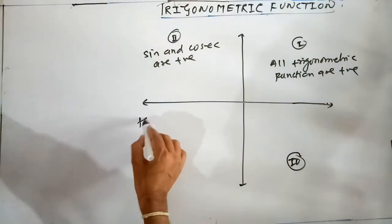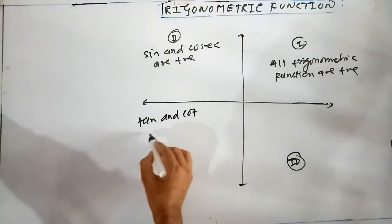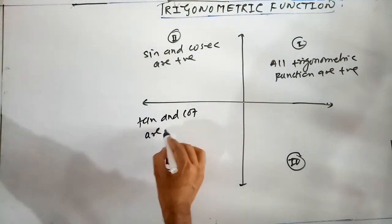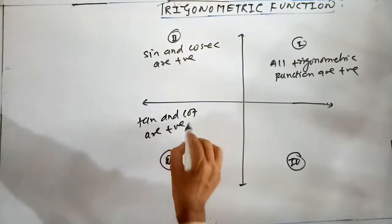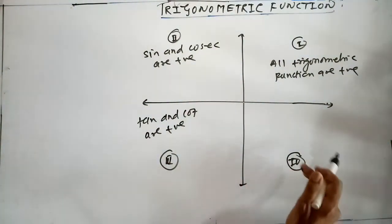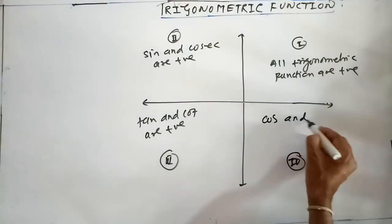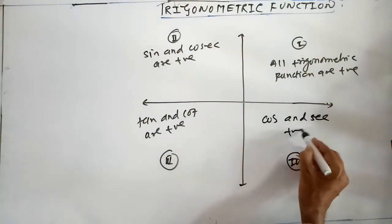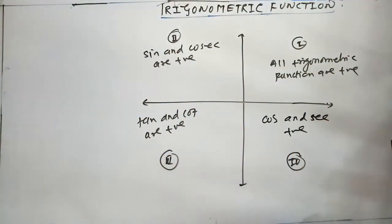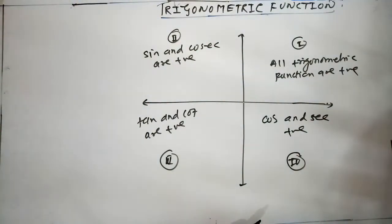Whereas in the third quadrant, tan and cot are positive, whereas other trigonometric functions are negative. And in the fourth quadrant, cos and sec are positive, whereas the rest of the trigonometric functions are negative.